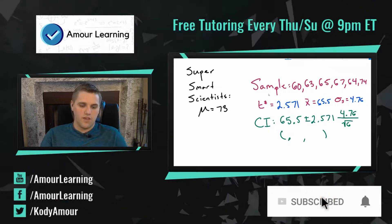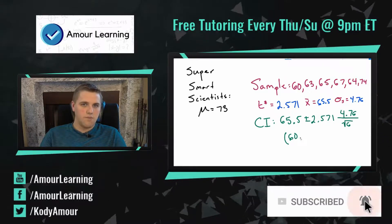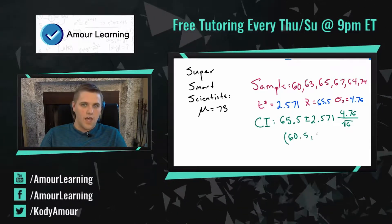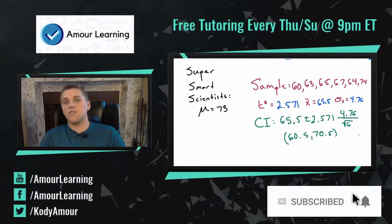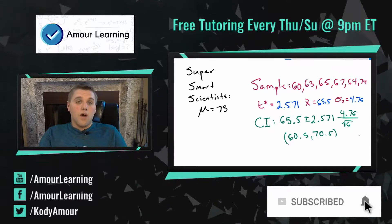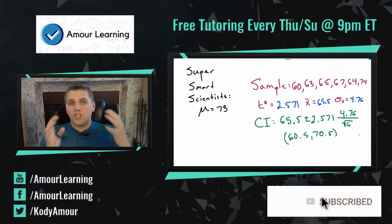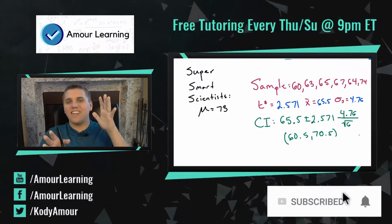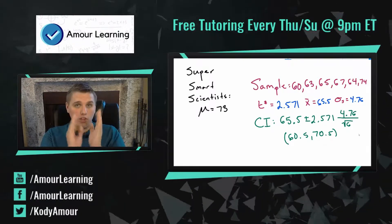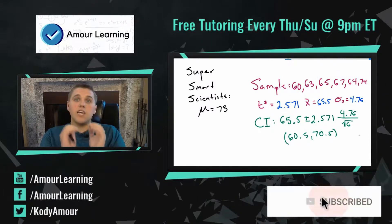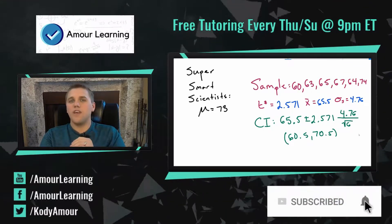That gives a margin of error of 5 — pretty convenient! So my lower number is 60.5 and my upper number is 70.5. That means I am 95% certain that the average height is between 60.5 and 70.5 inches. Now I want you to pause this video and really think about this: did I prove the super smart scientists wrong?